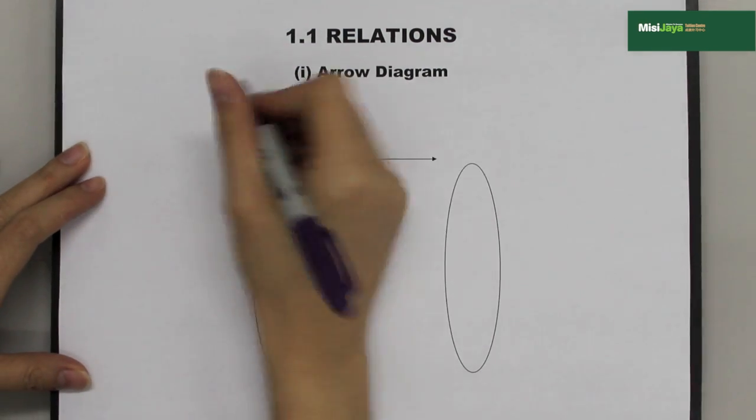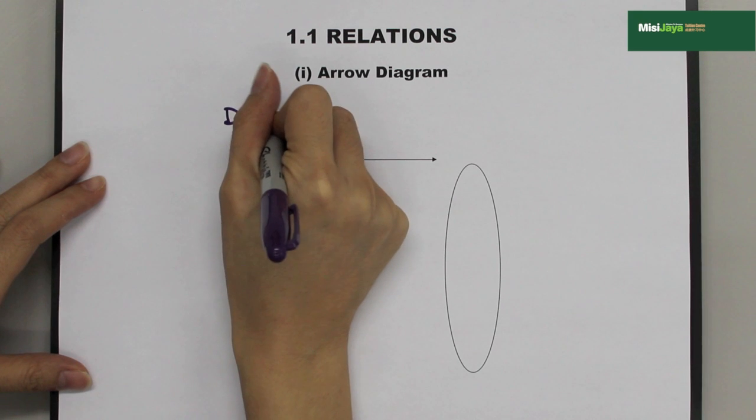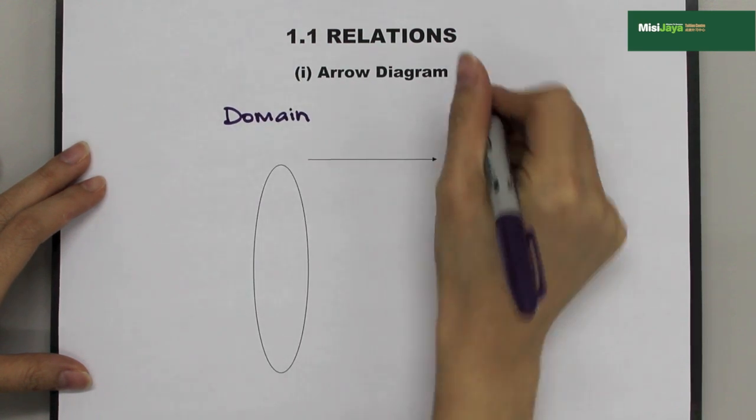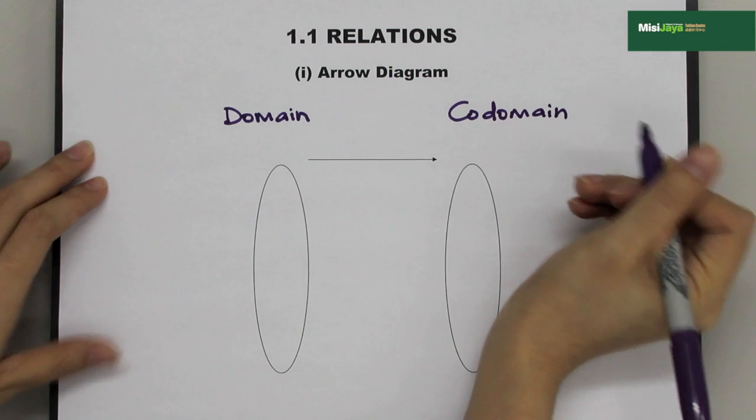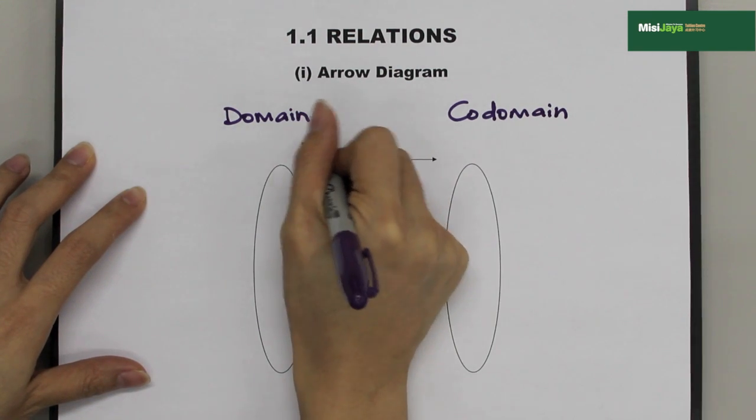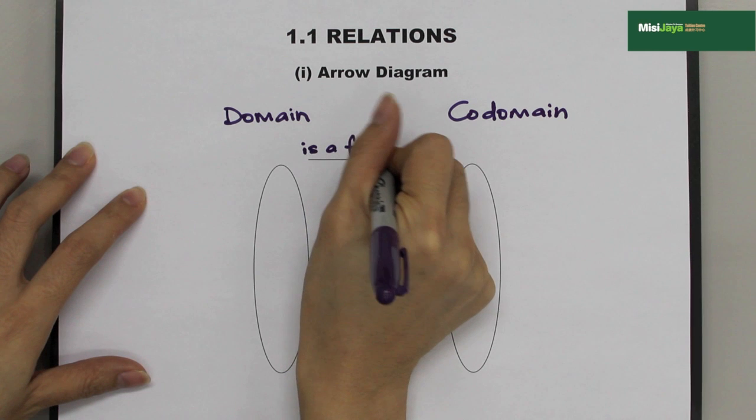On the left side, we call it domain. And on the right side, we call it codomain. This is a function, it's a factor of, we write on top of the arrow.